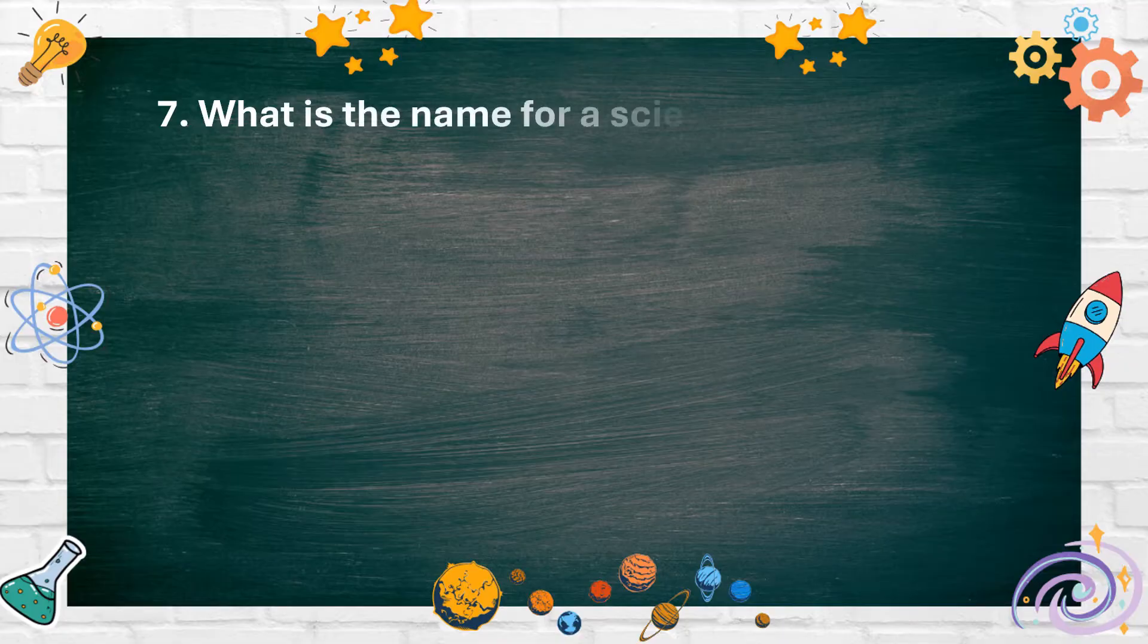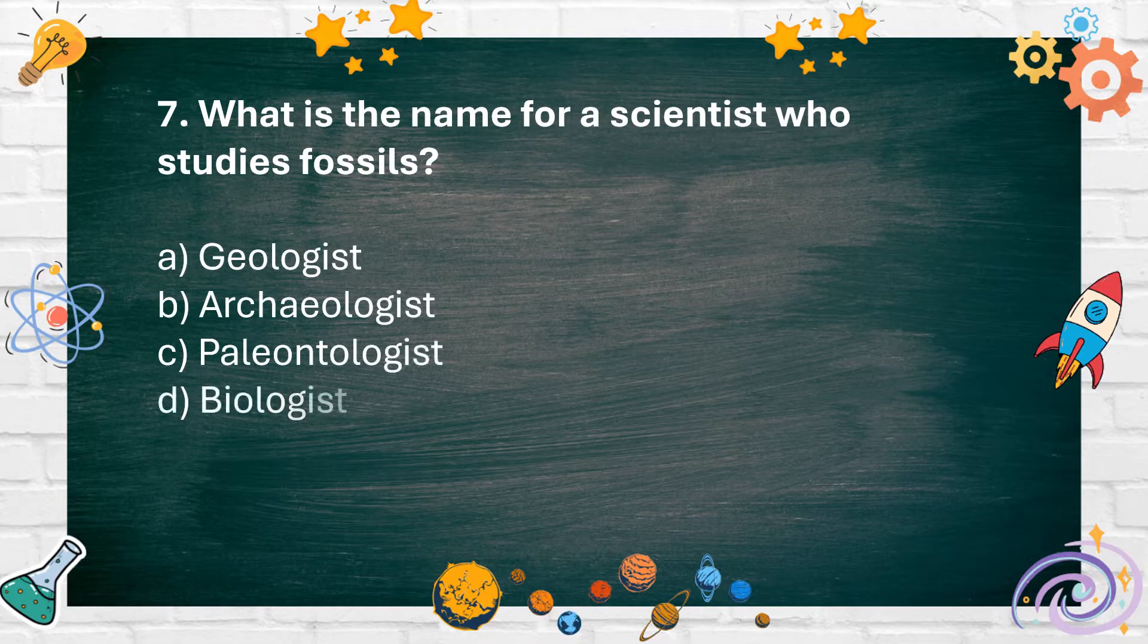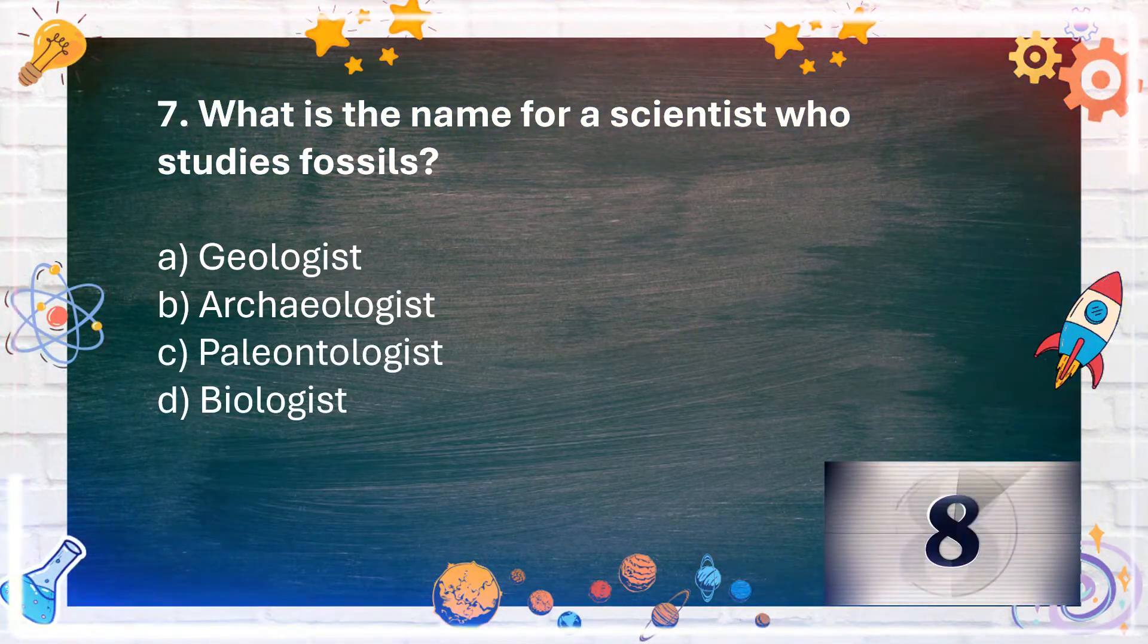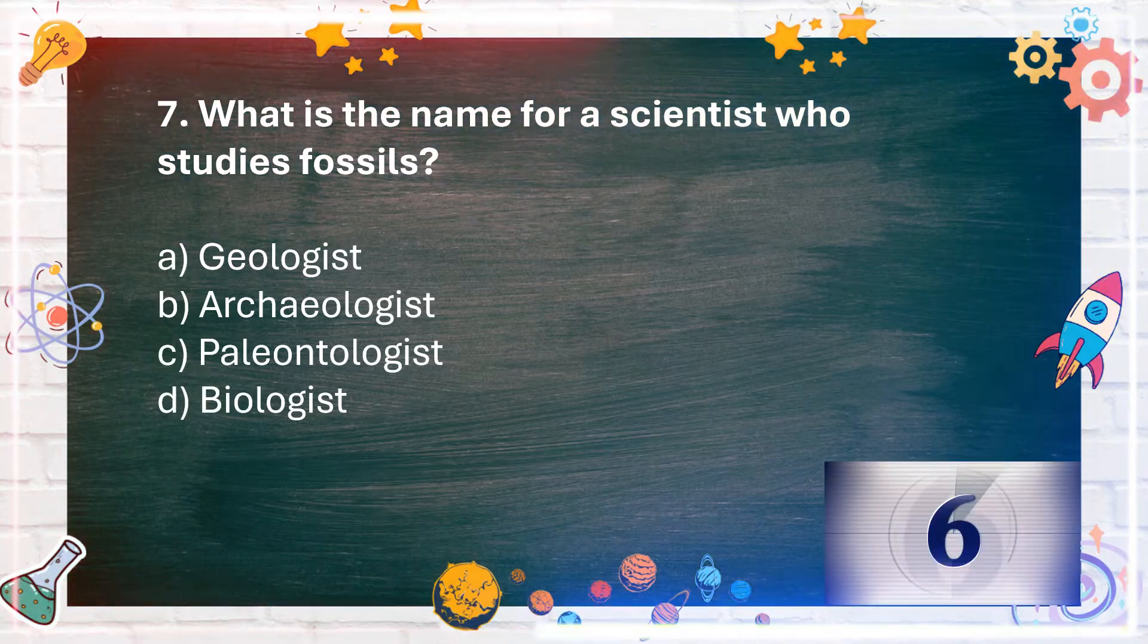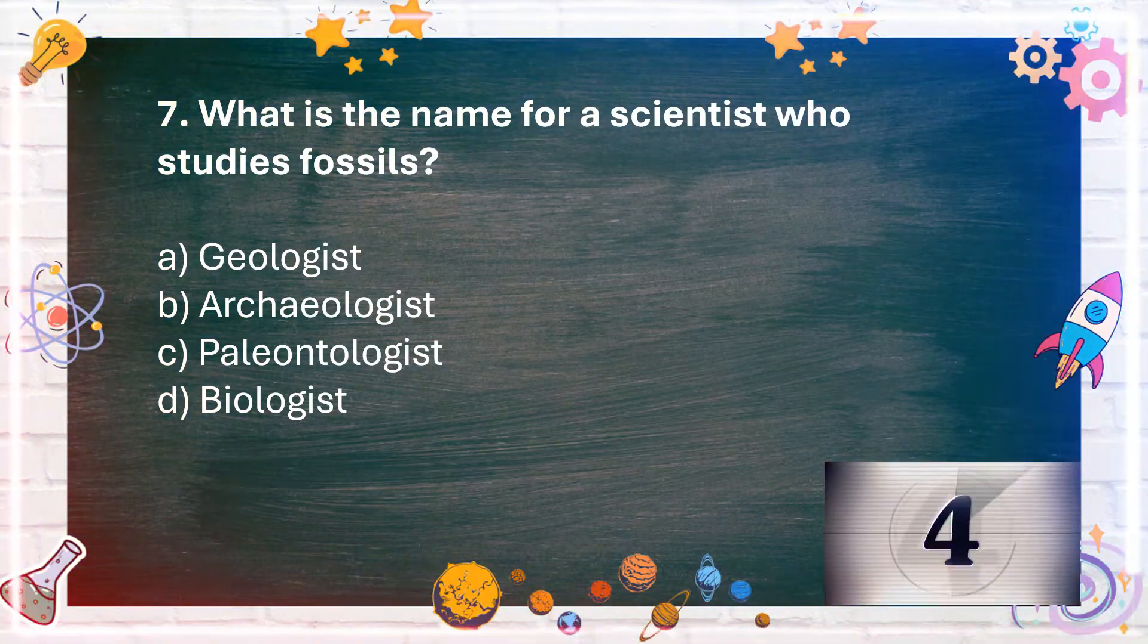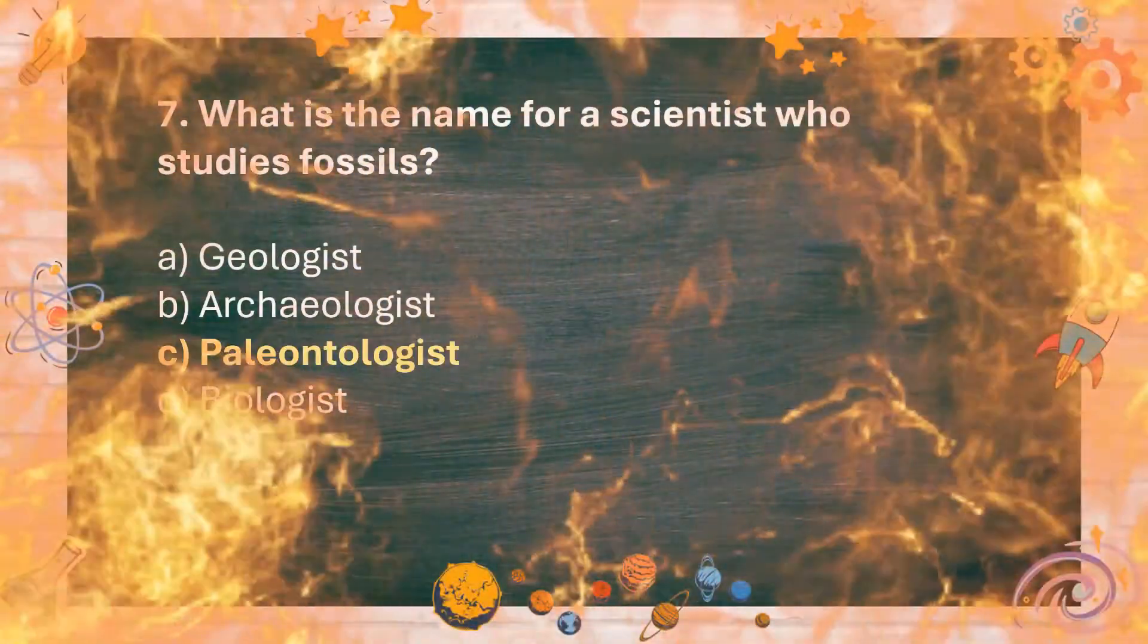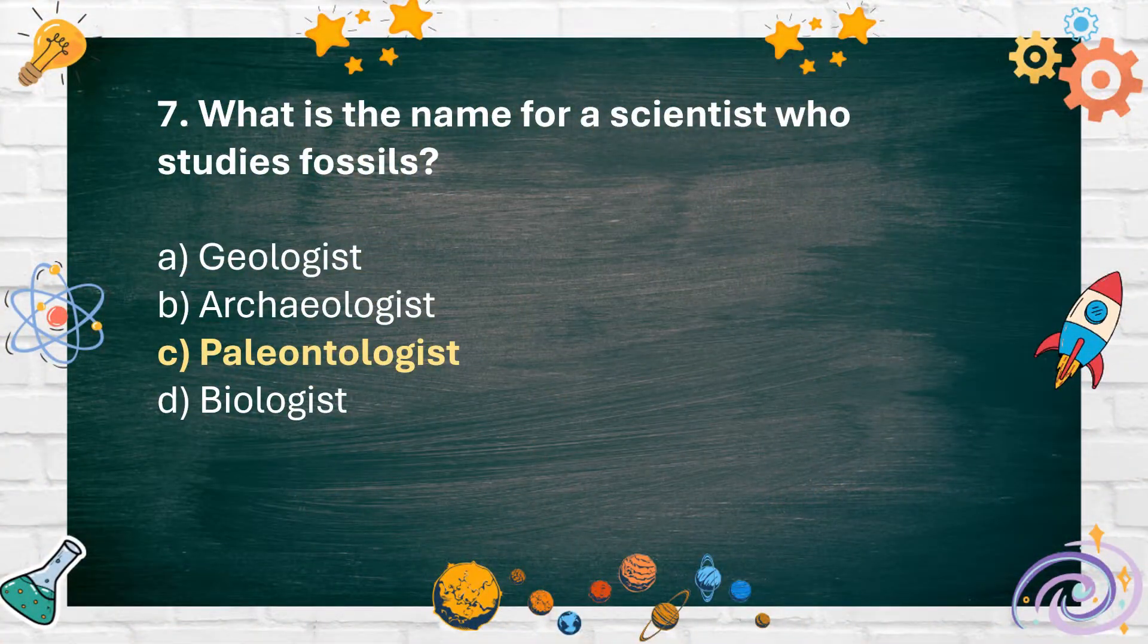Number 7: What is the name for a scientist who studies fossils? A. Geologist, B. Archaeologist, C. Paleontologist, D. Biologist. The answer is C. Paleontologist.